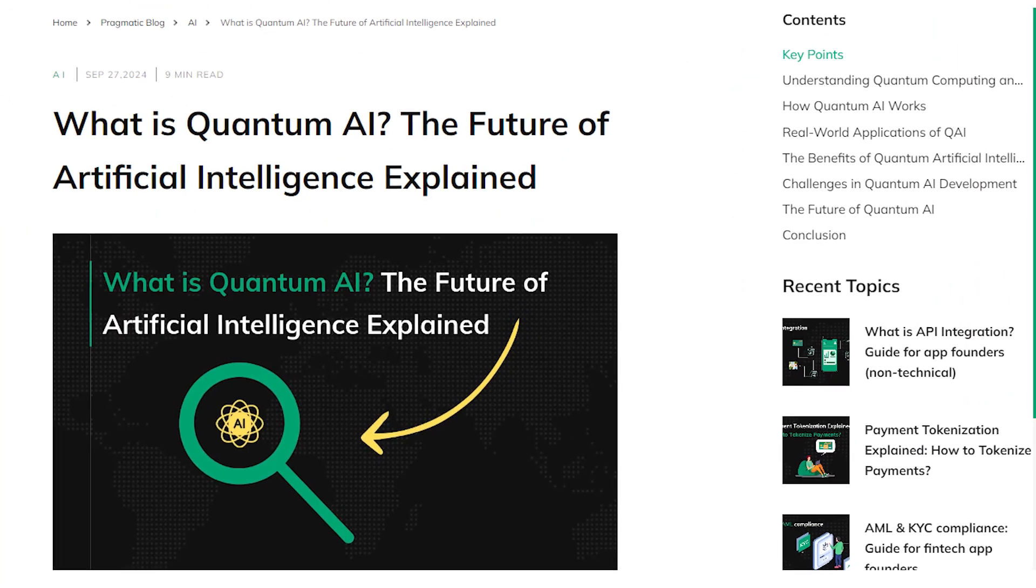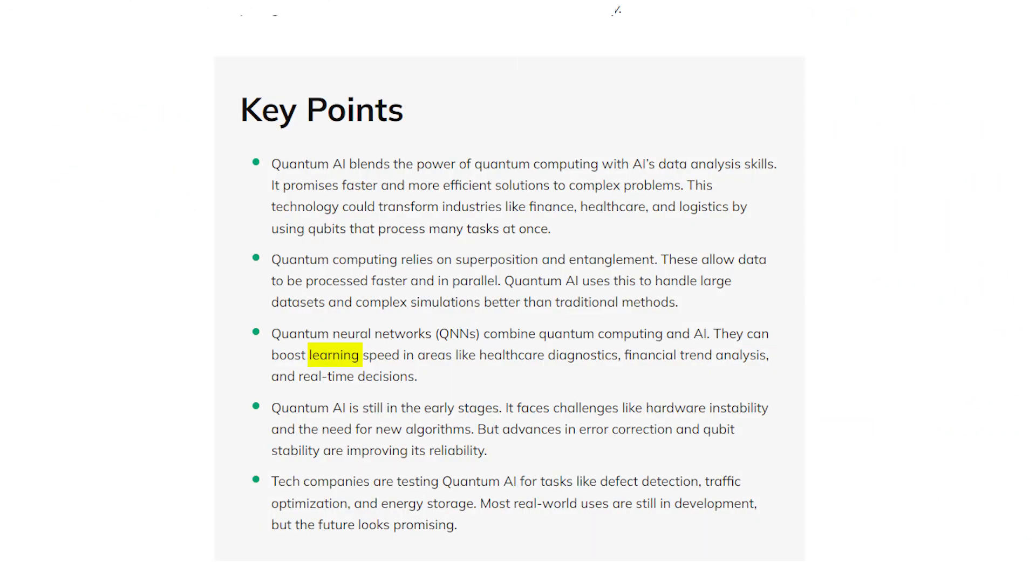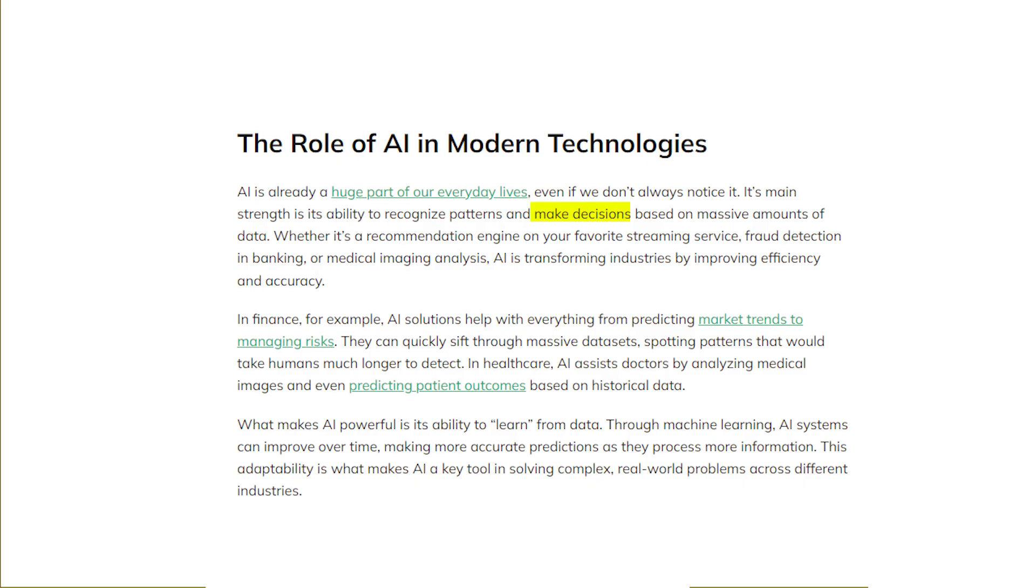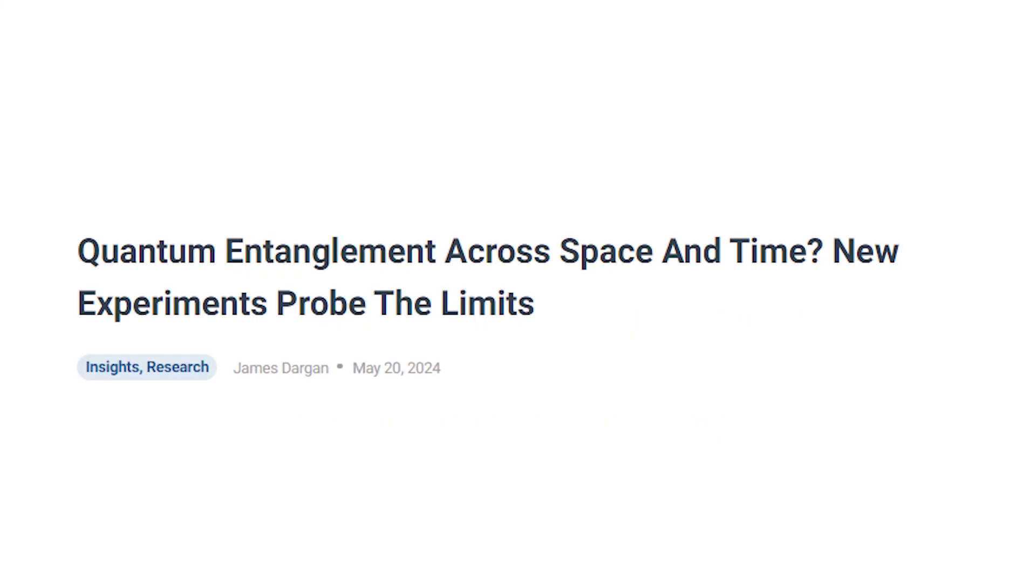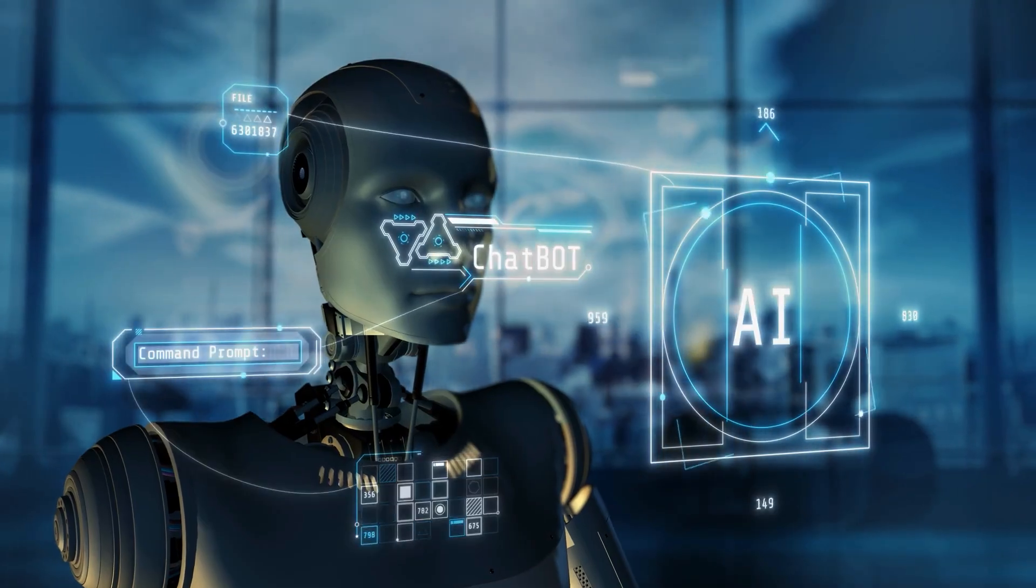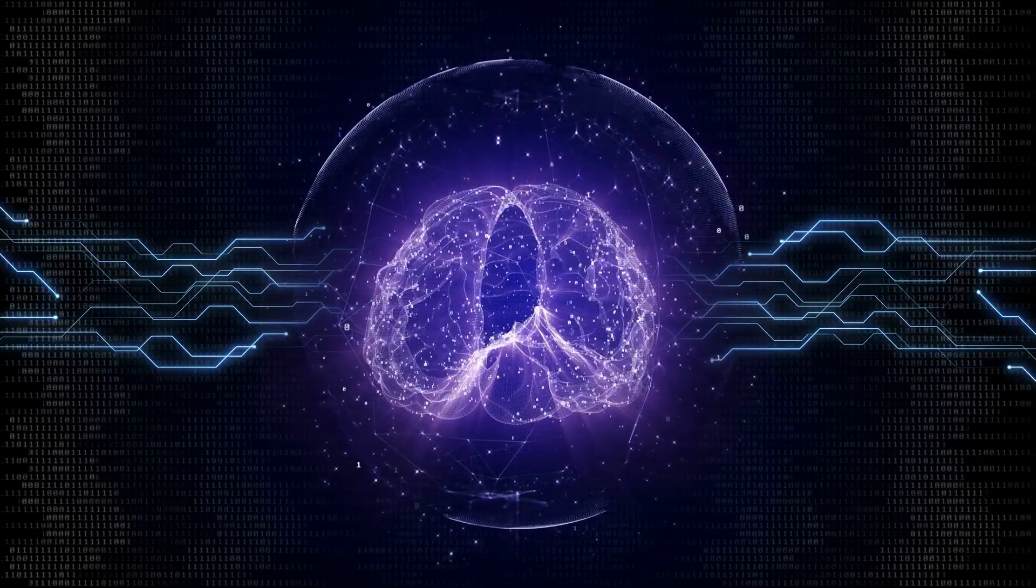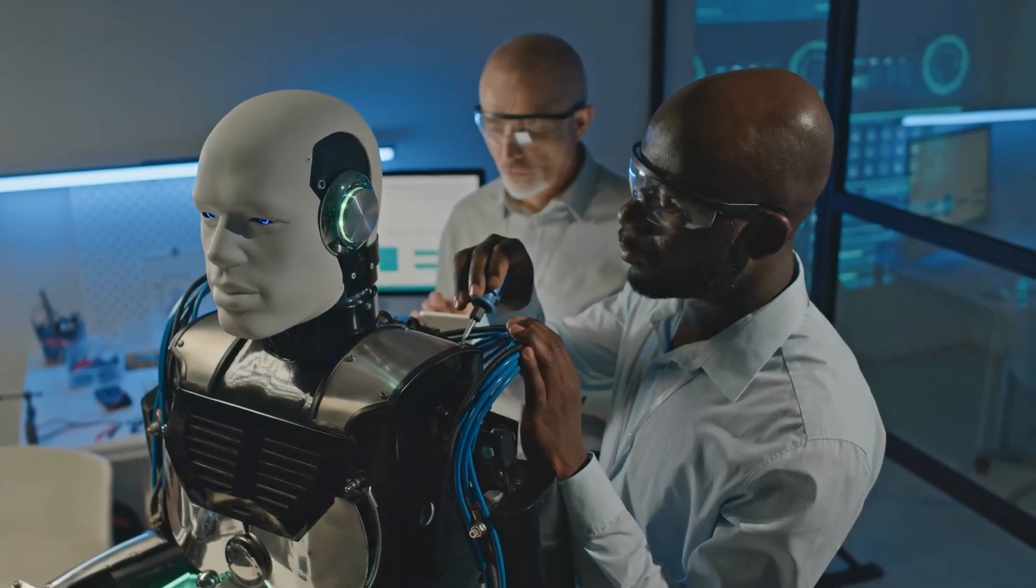Quantum AI could be the next frontier, enabling machines to learn, think, and make decisions at speeds that seem impossible right now. And because quantum entanglement bypasses the limits of time and space, this type of AI could communicate and process information in ways that would redefine how we think about intelligence, both artificial and human.